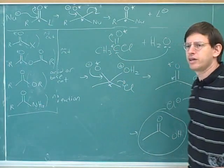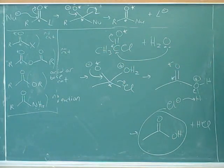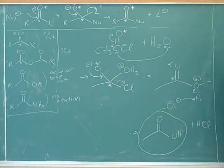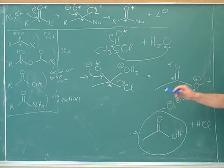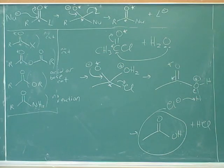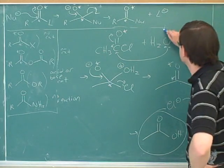What type of functional group did we start with? Acyl halide — acyl chloride. And what type of functional group did we end up with? Carboxylic acid. Now, do you remember what the name for this reaction is? Here we've treated an acid derivative with water to make a carboxylic acid. What do we call it when we treat something with water? Hydrolysis. This is a very important type of reaction.